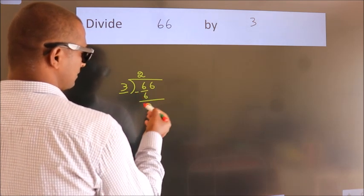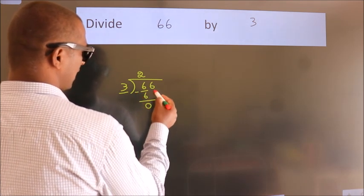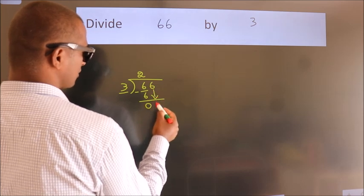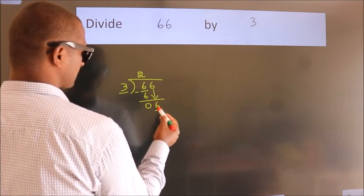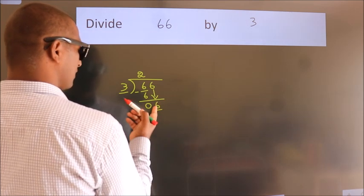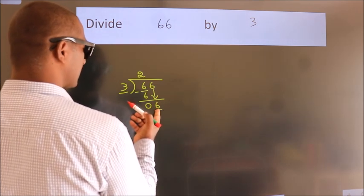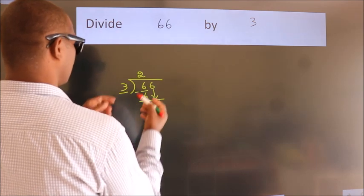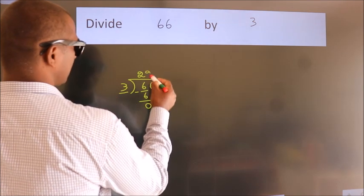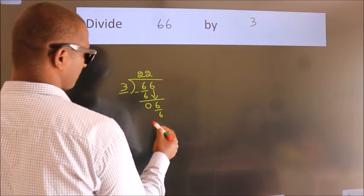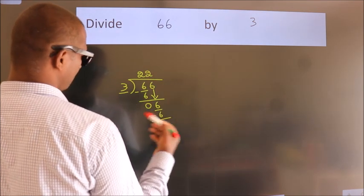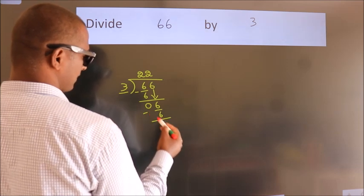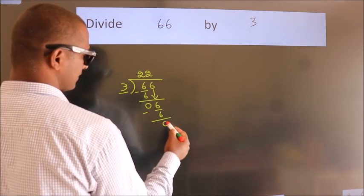After this, bring down the beside number. So 6 comes down. When do we get 6 in the 3 table? 3 times 2 is 6. Now we subtract. We get 0.